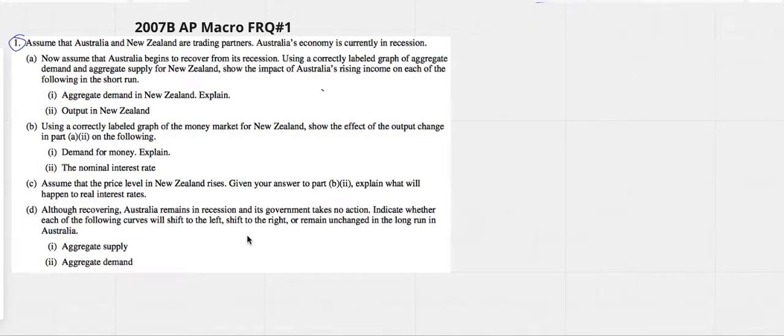2007 B AP Macro FRQ number one. Assume that Australia and New Zealand are trading partners. Australia's economy is currently in a recession. Now assume that Australia begins to recover from its recession. Using a correctly labeled graph for New Zealand, show the impact of Australia's rising income on each of the following.